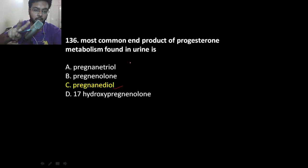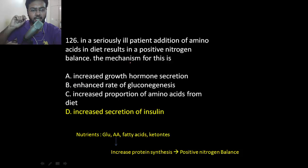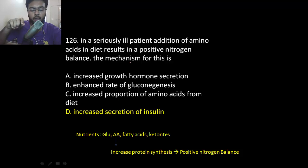The most common end product of progesterone is pregnanediol — remember, pregnanediol in urine. This indirectly gives the concentration of progesterone in the blood. Pregnanediol in urine is the key point to remember.